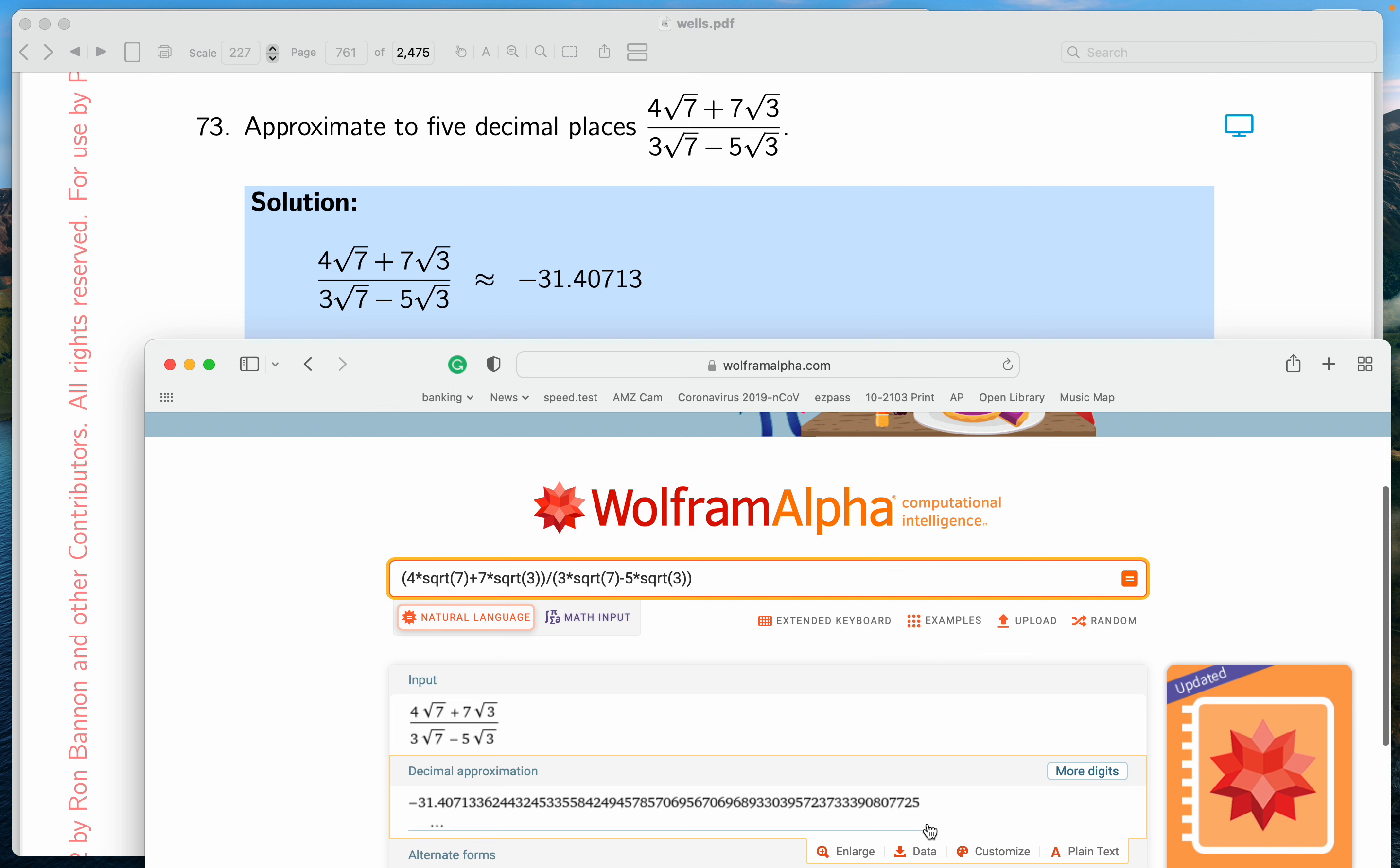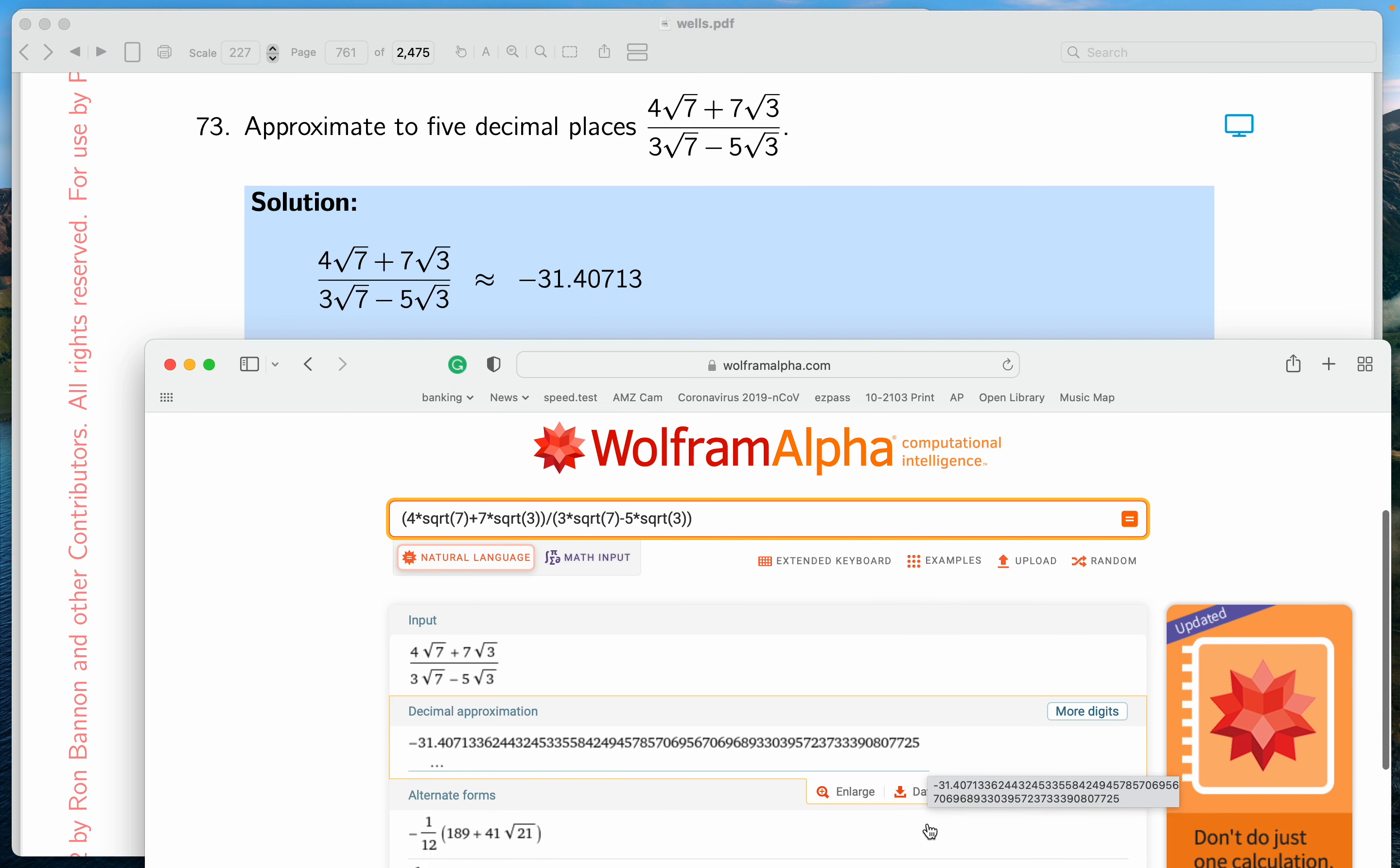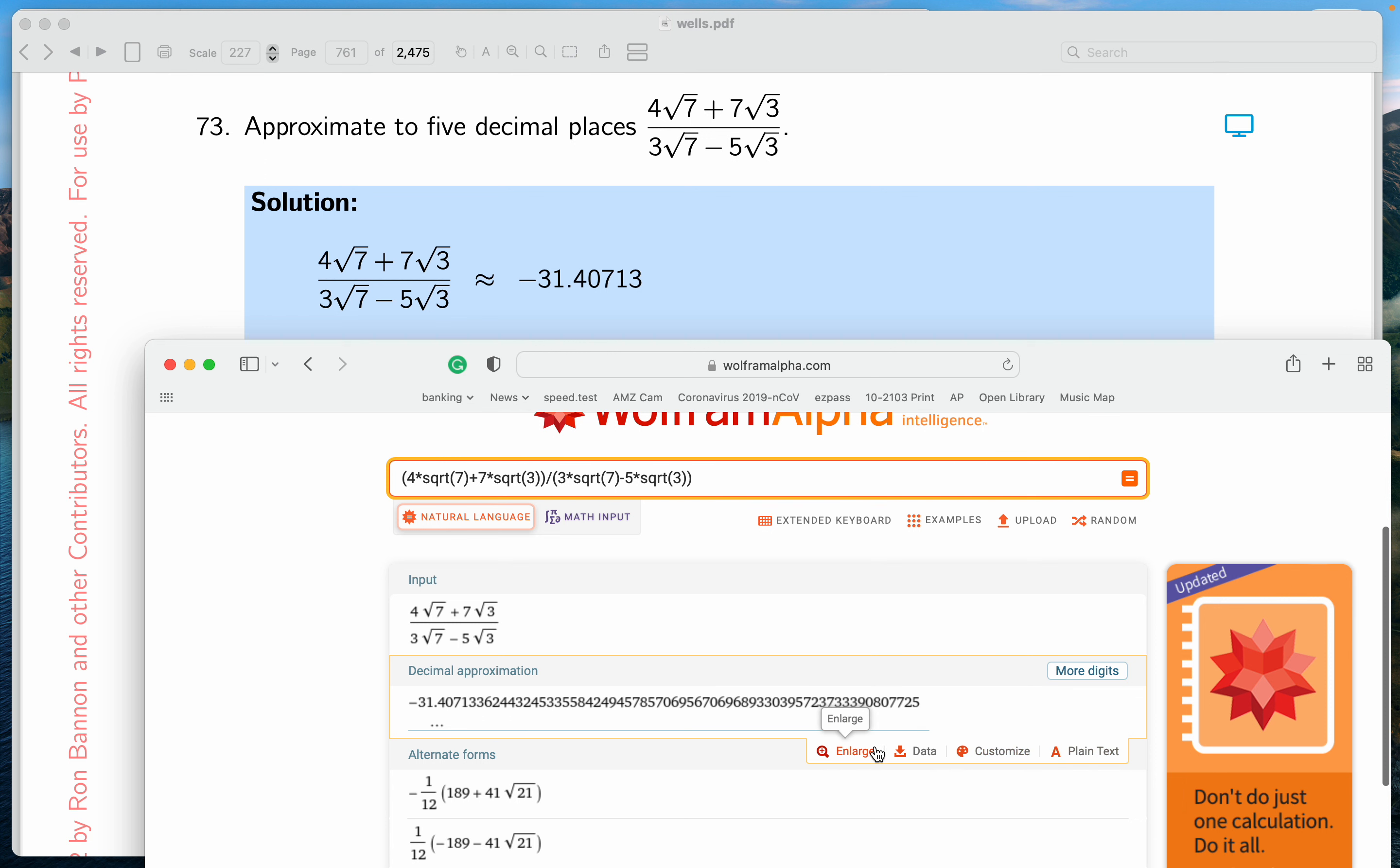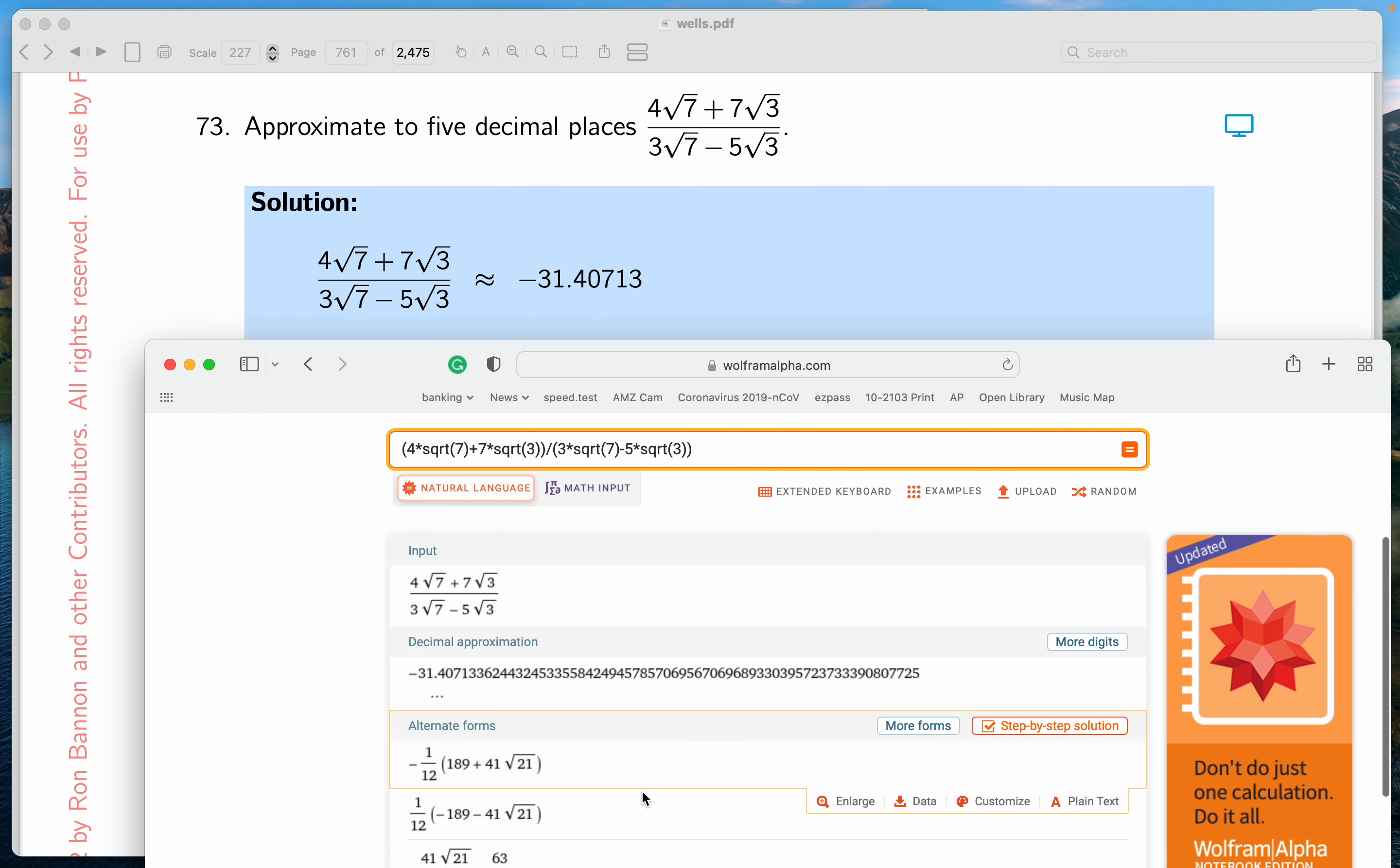They give me an incredible approximation to the number. And of course, there's options over here. These options are not going to work for me. The reason for that, I don't pay for the service. They also put alternative forms down. Forms that we're familiar with, like rationalizing the denominator, things like that.